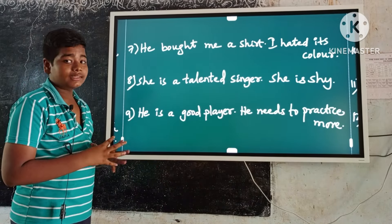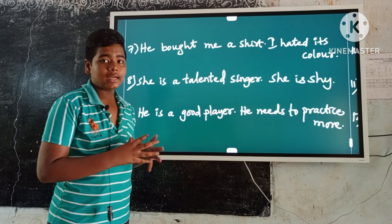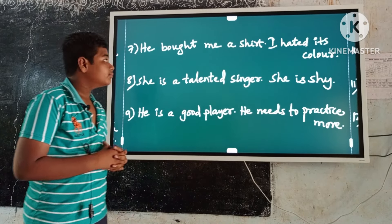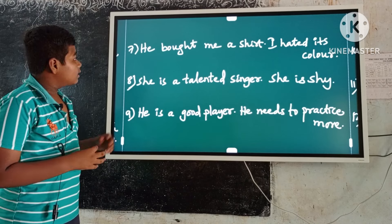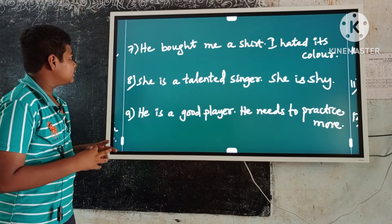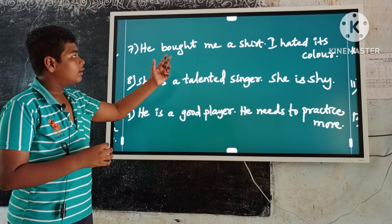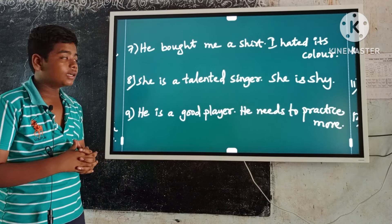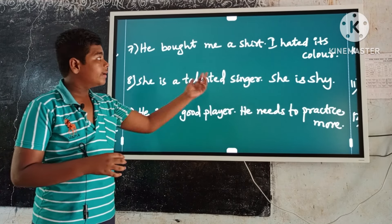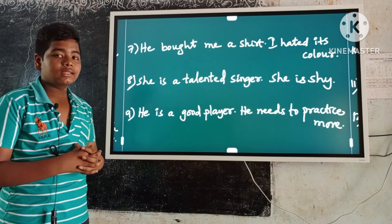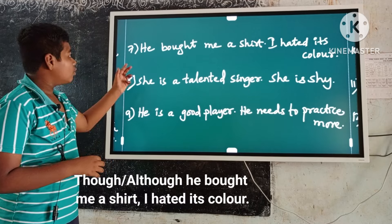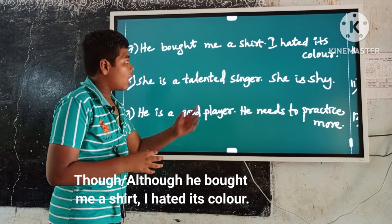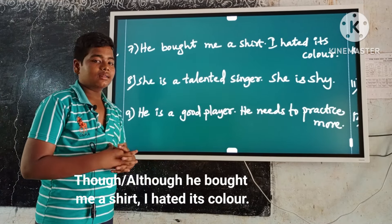Example number seven: He bought me a shirt. I hated his color. Here the first occurring sentence is 'he bought me a shirt.' Keep though or although before it, and a comma before the second sentence. So the answer is: Though or although he bought me a shirt, I hated his color.